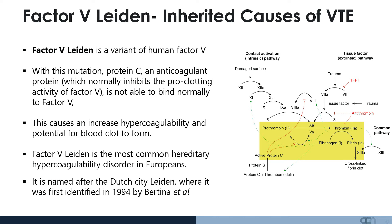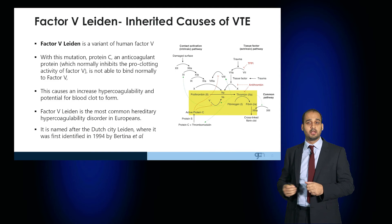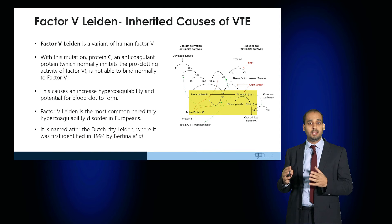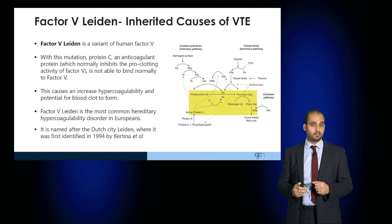This results in factor V driving forward into factor Va, generating thrombin, fibrin, and crosslinked clots.